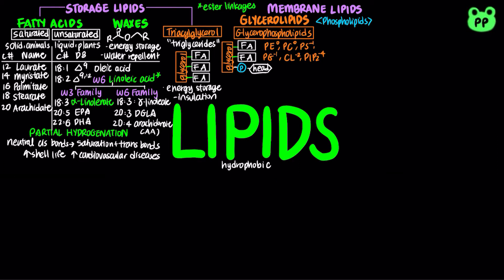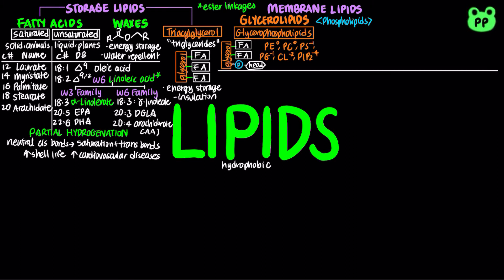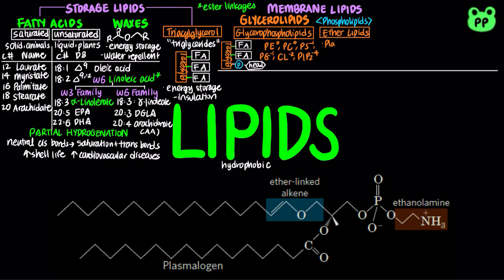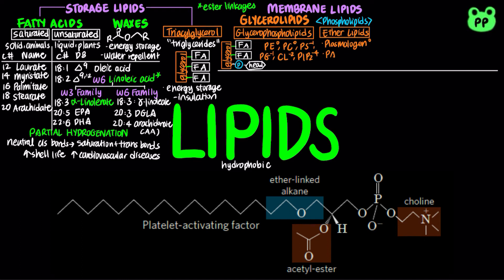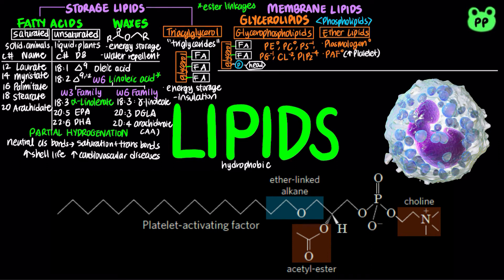In some glycerophospholipids, one of the two acyl chains is attached to glycerol via an ether linkage rather than an ester linkage. Examples include plasmalogen, which is a neutral ether glycerophospholipid with ethanolamine as its head group, especially abundant in the heart membrane. Platelet activating factor (PAF) is another neutral ether glycerophospholipid with choline as its head group. PAF is a potent molecular signal released from leukocytes called basophils, which stimulate platelet aggregation and the release of vasoconstrictive serotonin from platelets.